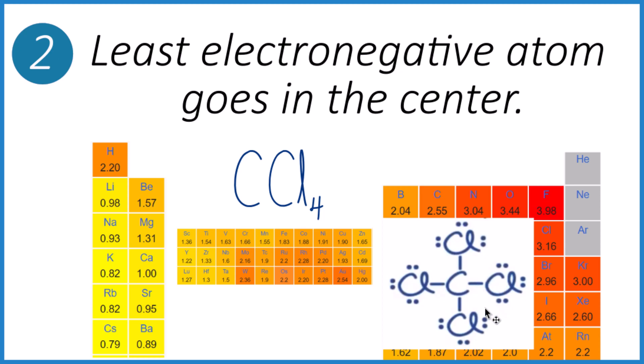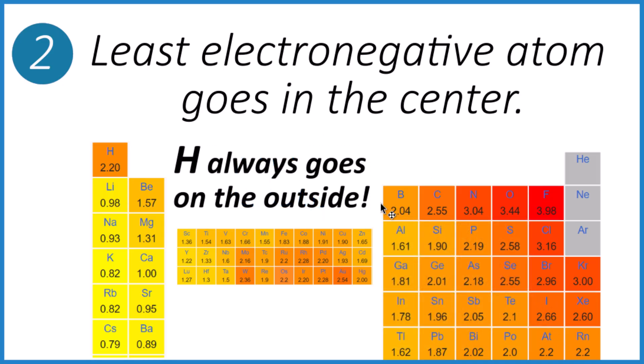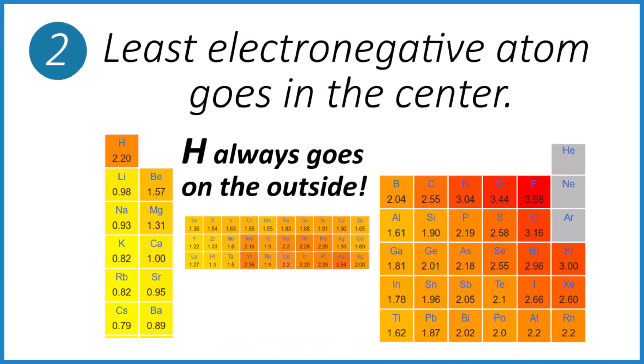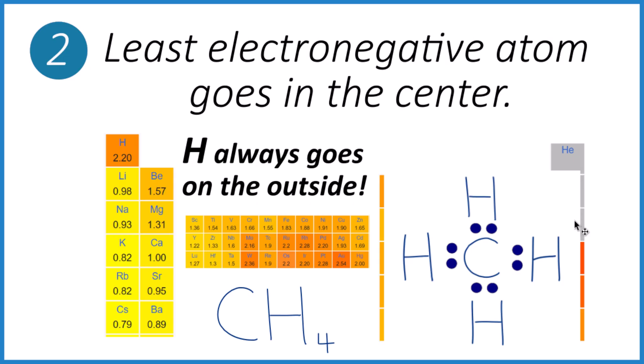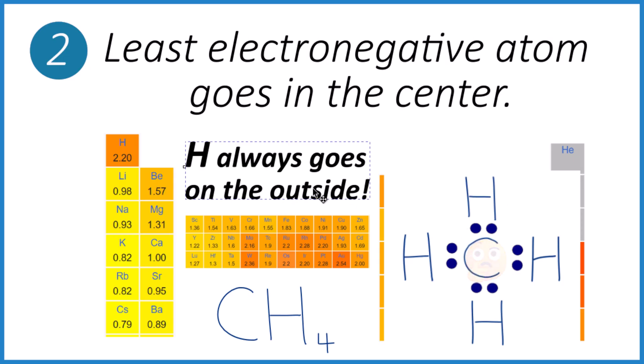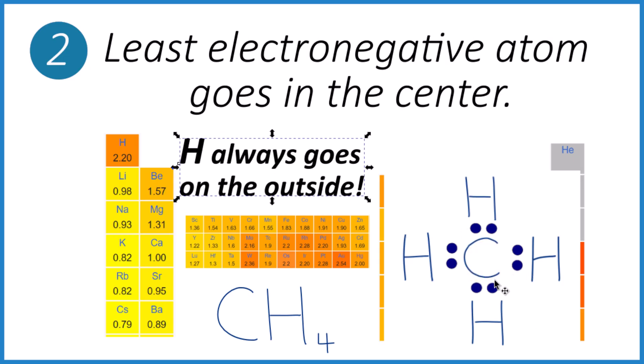And note these lines, they represent pairs of electrons that are bonded between the atoms there. Okay. One thing to watch out for though. Hydrogen atoms always go on the outside. So for something like CH4, we'll put the hydrogens around the carbon. Hydrogen atoms always go on the outside. So give this one a try.